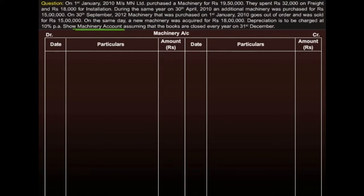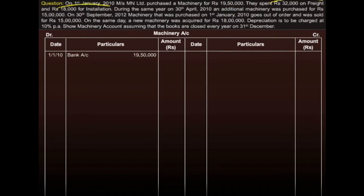As given, on January 1st, 2010, a new machine was purchased. So we debit bank account with this amount. Freight and installation charges were incurred, so we add these charges and the total amount is shown in the outer column. Let's name this machine as M1.